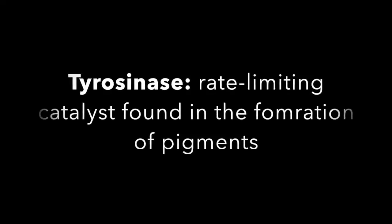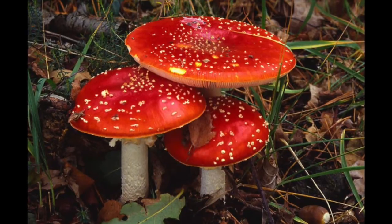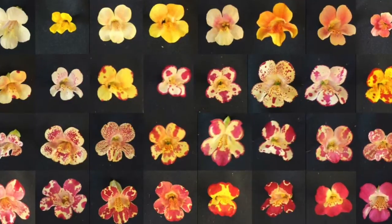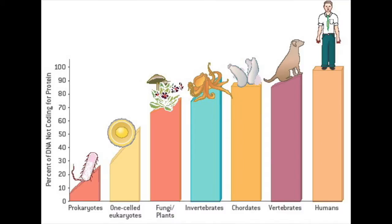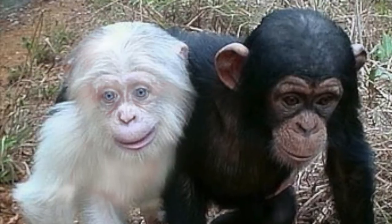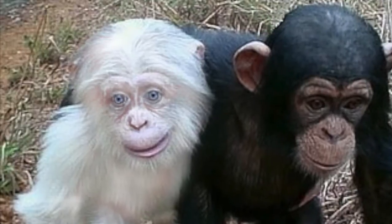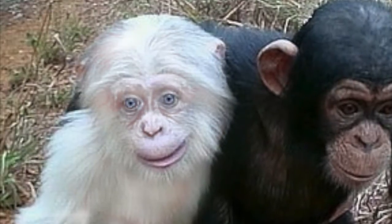Tyrosinase is a rate-limiting oxidase found among microorganisms, plants, and animals. In fungi and vertebrates, it is well-known for its participation as a rate-limiting catalyst during the formation of pigments and is commonly found in nature. Tyrosinase is responsible for the formation of many enzymes, and as the complexity of the organism increases, so does the number of tyrosinase-like enzymes that organisms produce. An absence of tyrosinase can lead to several diseases and genetic disorders, such as albinism. Though tyrosinase is found in various different forms in plants, animals, and humans, this video will mostly focus on the function of tyrosinase in humans.